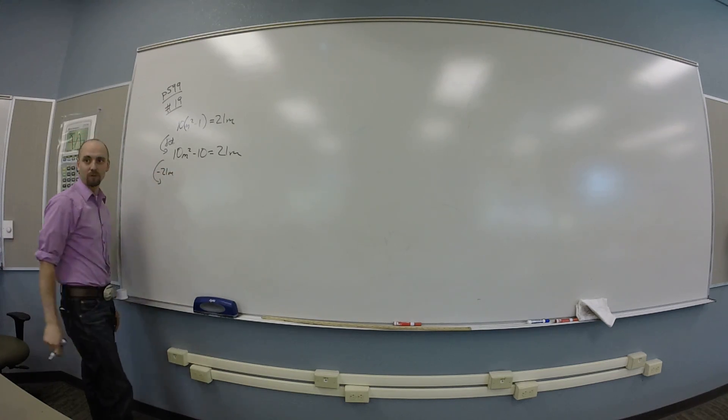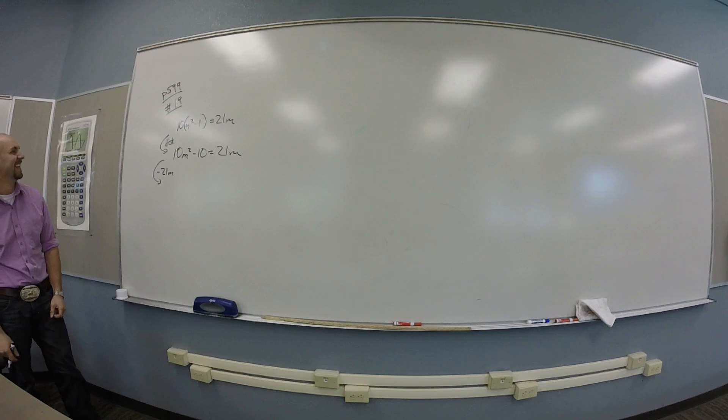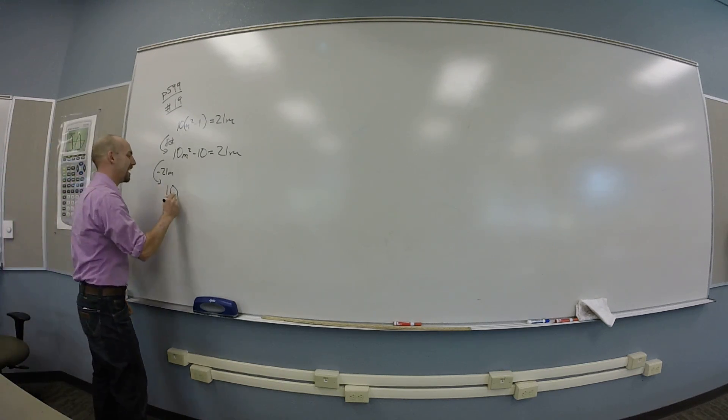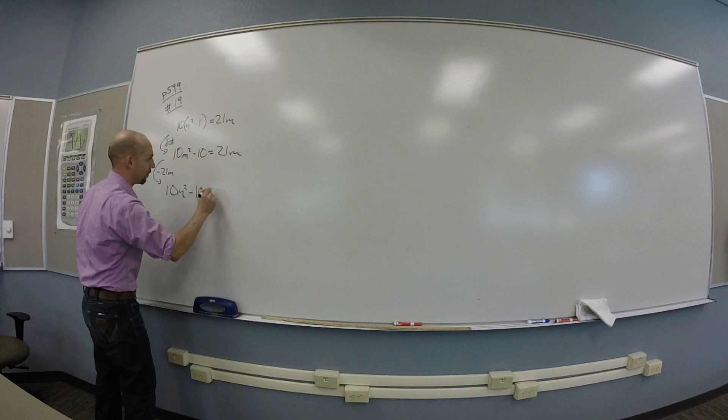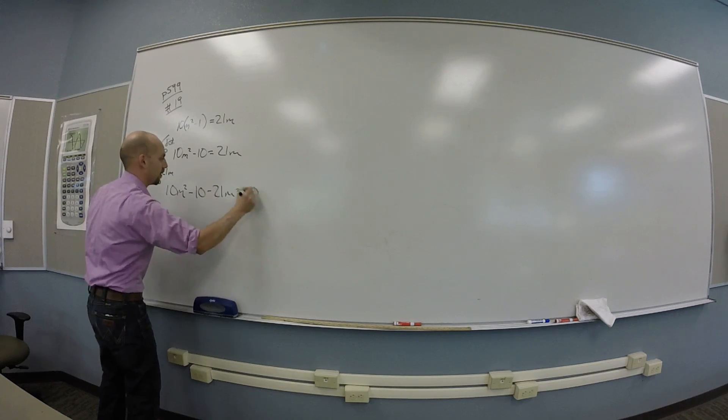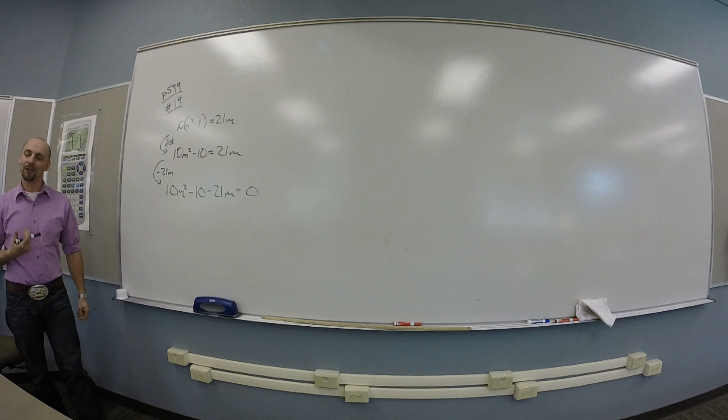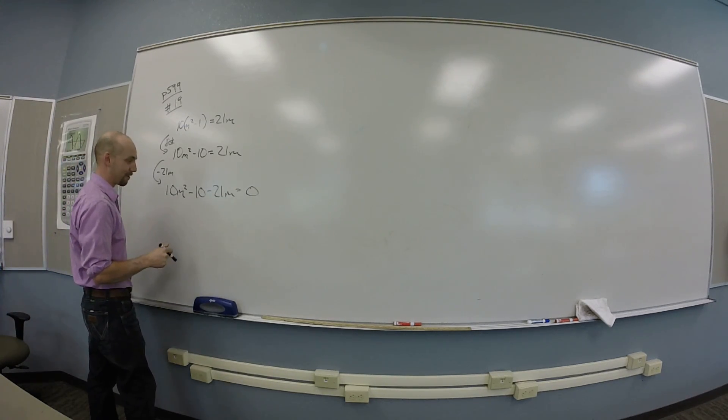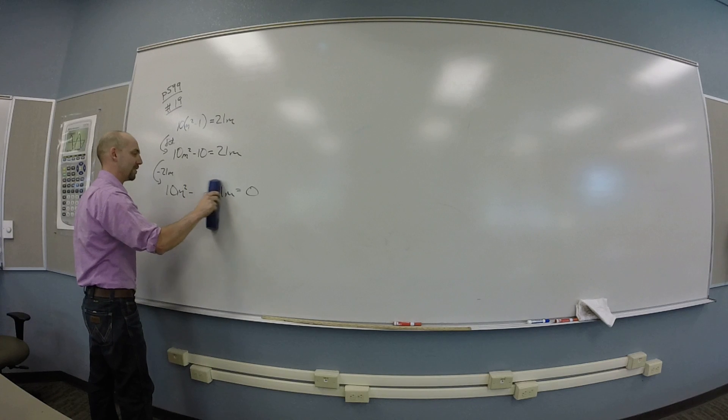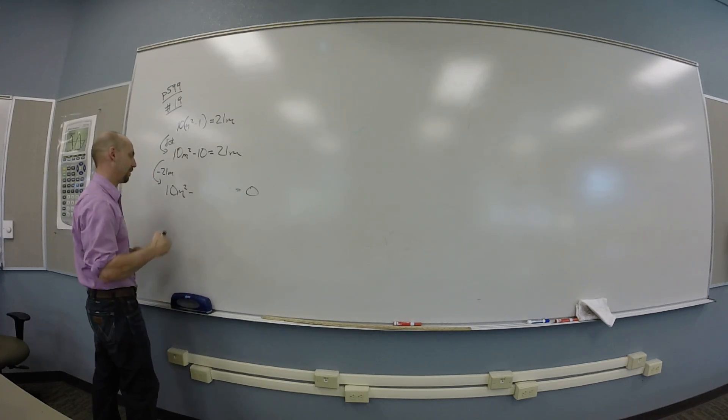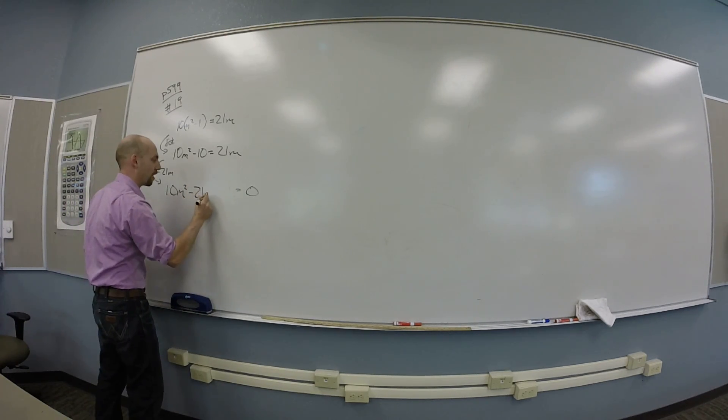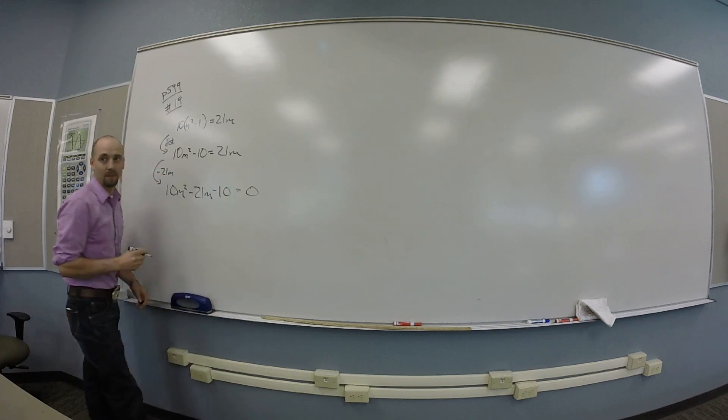Good. So we subtract 21m. So we've got 10m squared minus 10 minus 21m is 0. And I didn't write this in standard form and you all want to complain about that, right? Yeah. Okay.